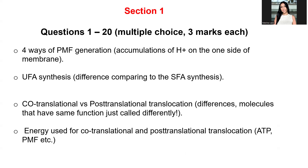Know the four ways of proton motive force generation — redox loop, direct translocation, and the others, including accumulation of positive ions on one side of the membrane. For unsaturated fatty acid synthesis, know how it differs from saturated fatty acid synthesis, specifically the cis versus trans bond — when it is cis and when it is trans.